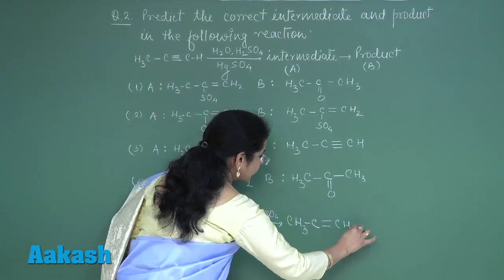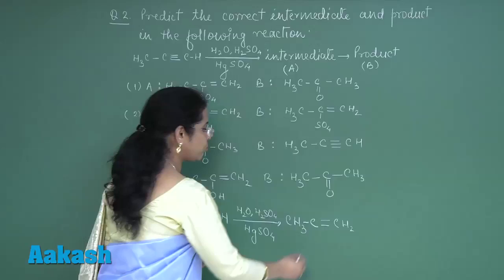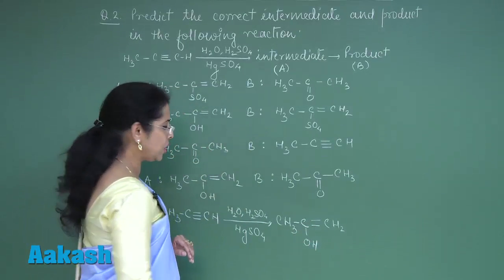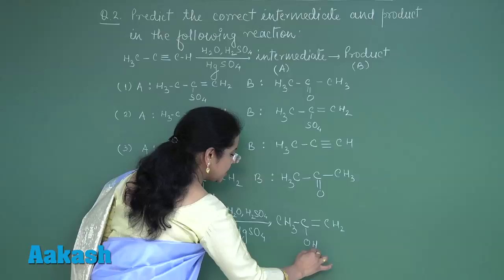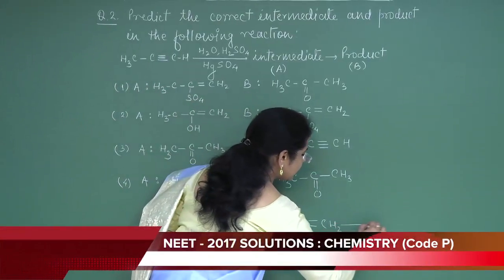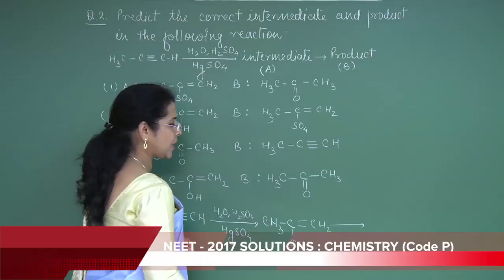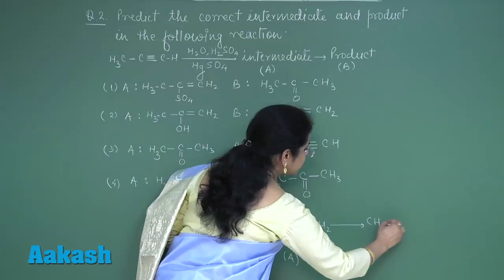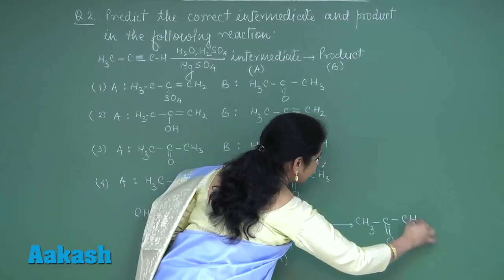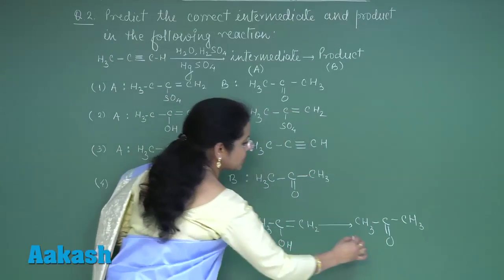First step will be addition of water according to Markovnikov rule, due to which this intermediate substance is formed. And this intermediate substance immediately undergoes tautomerization, converted into more stable product, and that is ketone. So intermediate A is this.